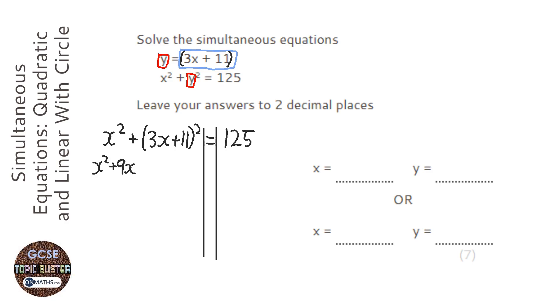3x times 11 is 33 plus another 33 is going to be plus 66x. And then 11 times 11 is going to be 121 equals 125.